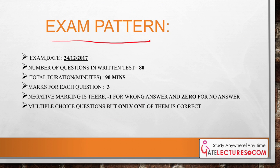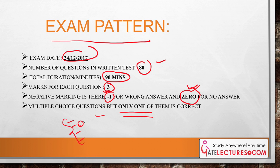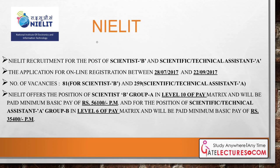The ISRO exam pattern, based on previous years' papers, includes a total of 80 questions with a total duration of 90 minutes — one and a half hours. Each question carries 3 marks. There is negative marking of minus 1 for each wrong answer. This is a multiple choice exam with only one correct answer out of four options.